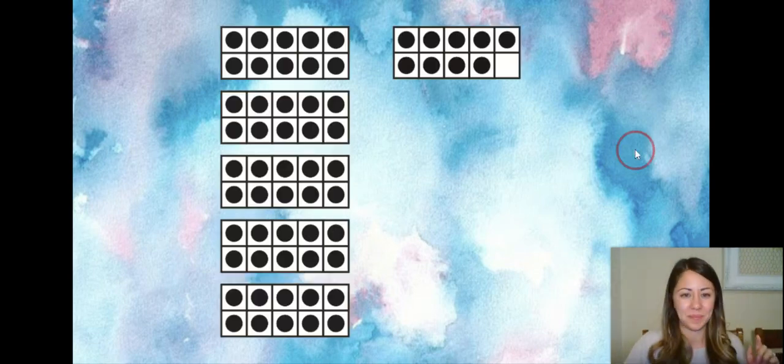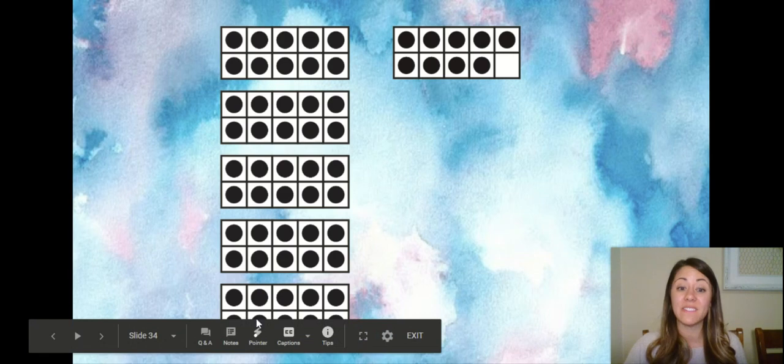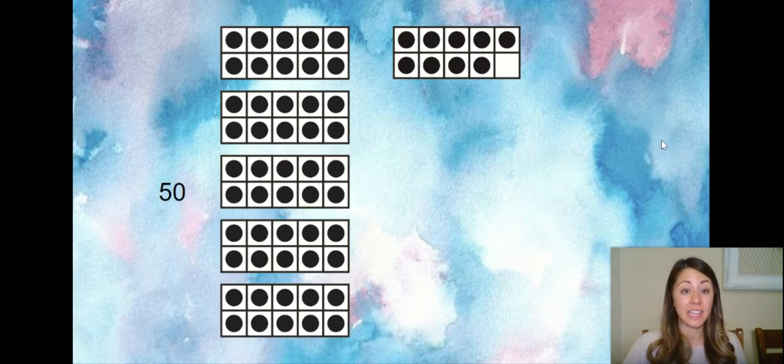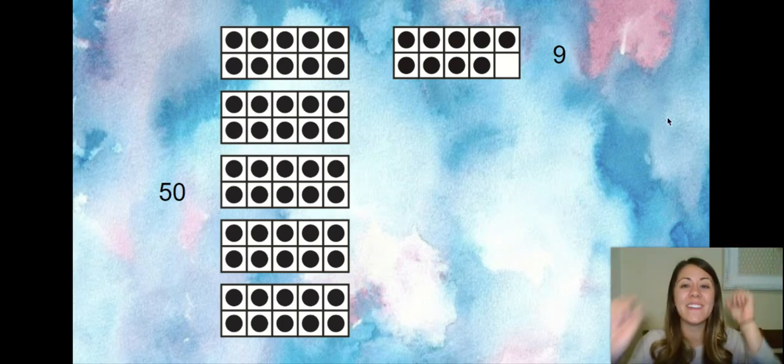Let's check it. So let's count the tens first. I know there's 10, 20, 30, 40, 50 - I saw five tens, I know that's 50. And right here I know if I had one more dot it would make a 10, but it's not a 10, one less would be nine. Okay, 50 and nine is the same as 59. You got it!